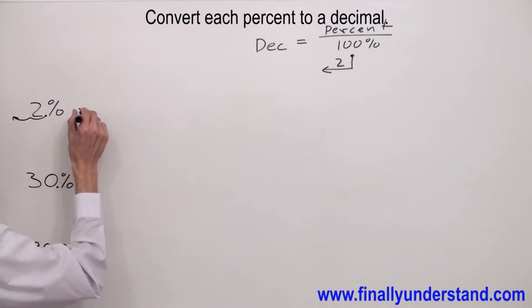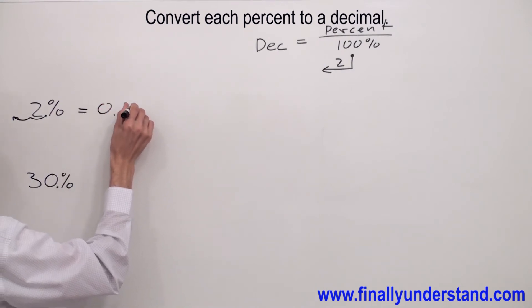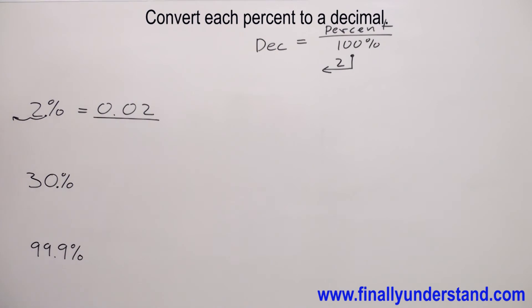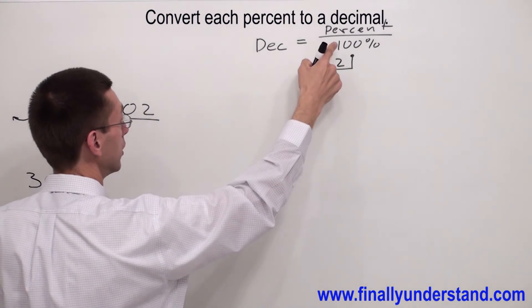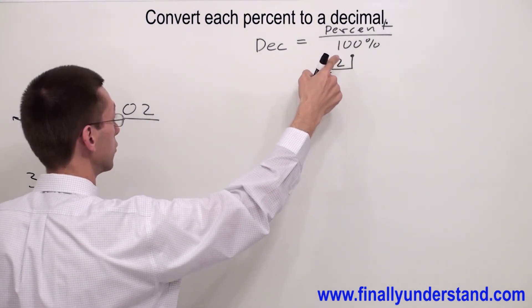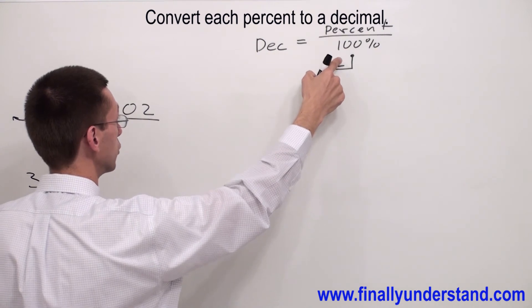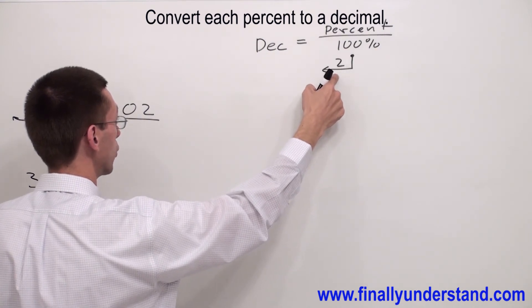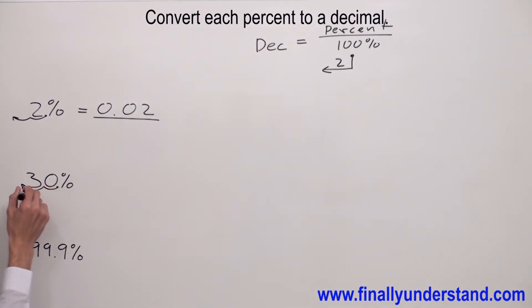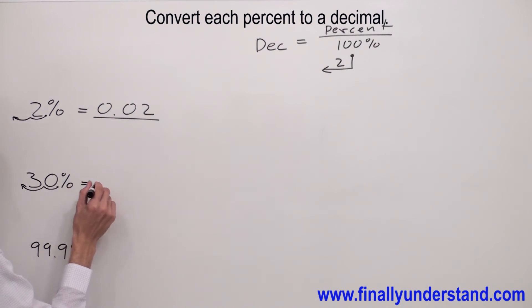That's why my answer is going to be equal to 0.02. Let's take a look at another one. Again, anytime we want to find the decimal number, we have to divide the percent number by 100%. You have to move the decimal point twice to the left, so I'm simply going to move this decimal point twice to the left. That's why my answer is 0.3.